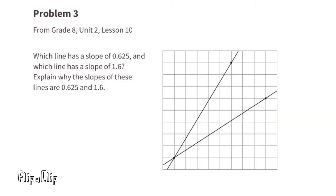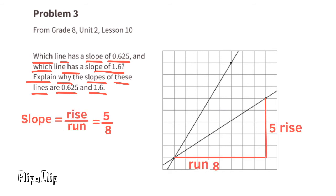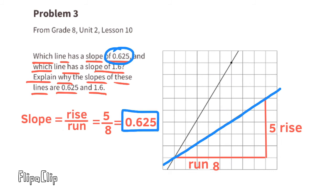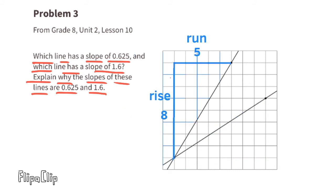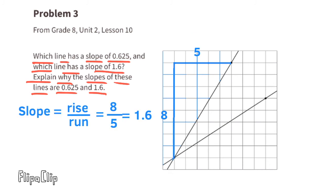Problem 3, from 8th grade Unit 2 Lesson 10: Which line has a slope of 0.625 and which has a slope of 1.6? The slope of a line is rise over run, or vertical change divided by horizontal change. For the first line, the rise is 5 and the run is 8, so the slope is 5 divided by 8, or 0.625. For the second line, the rise is 8 and the run is 5, so the slope is 8 divided by 5, or 1.6.